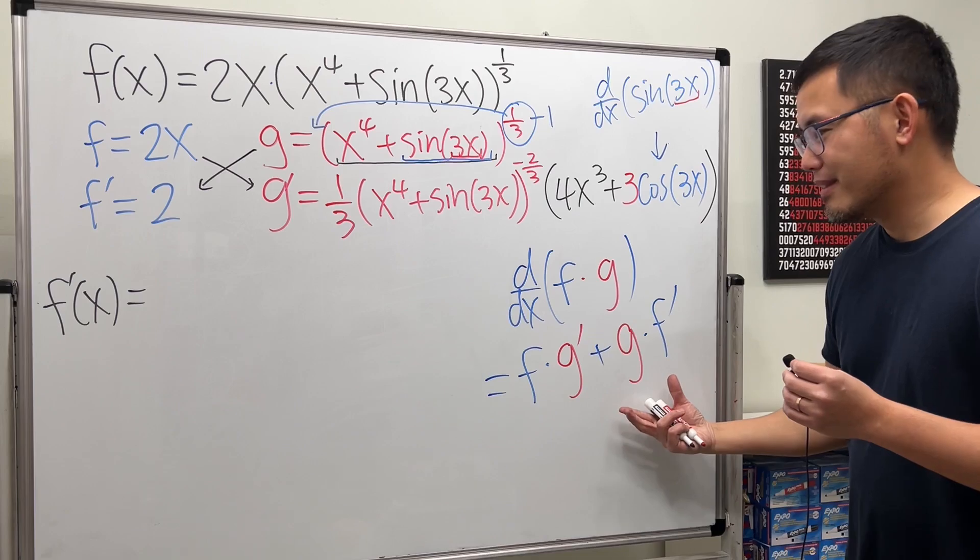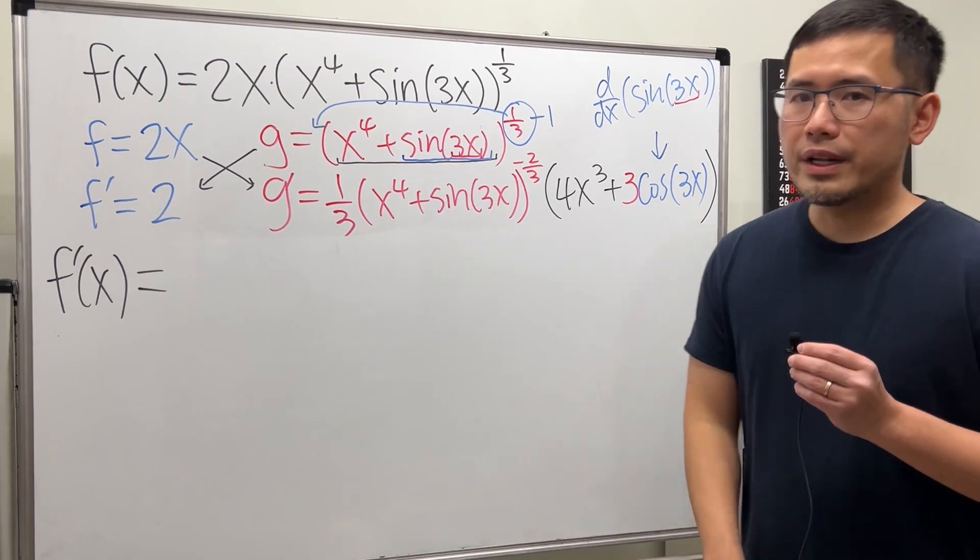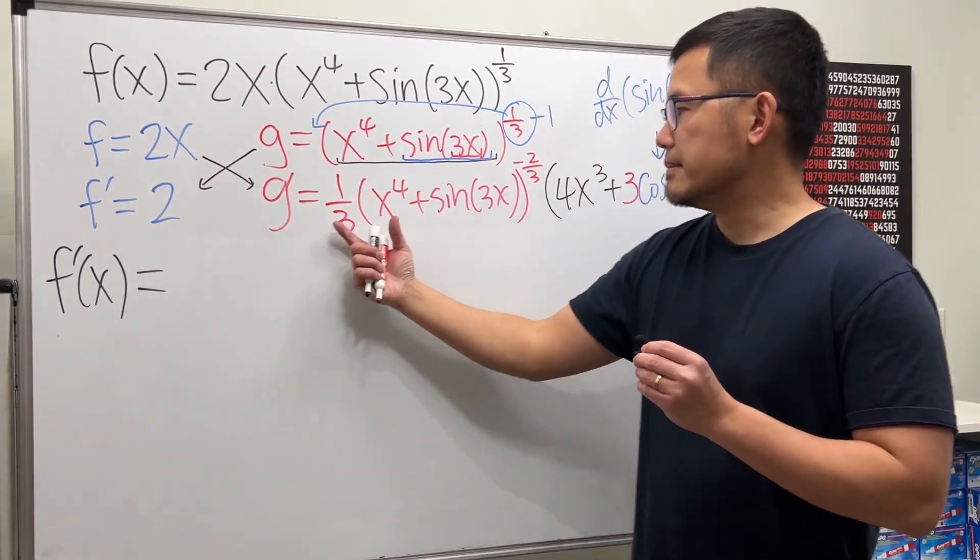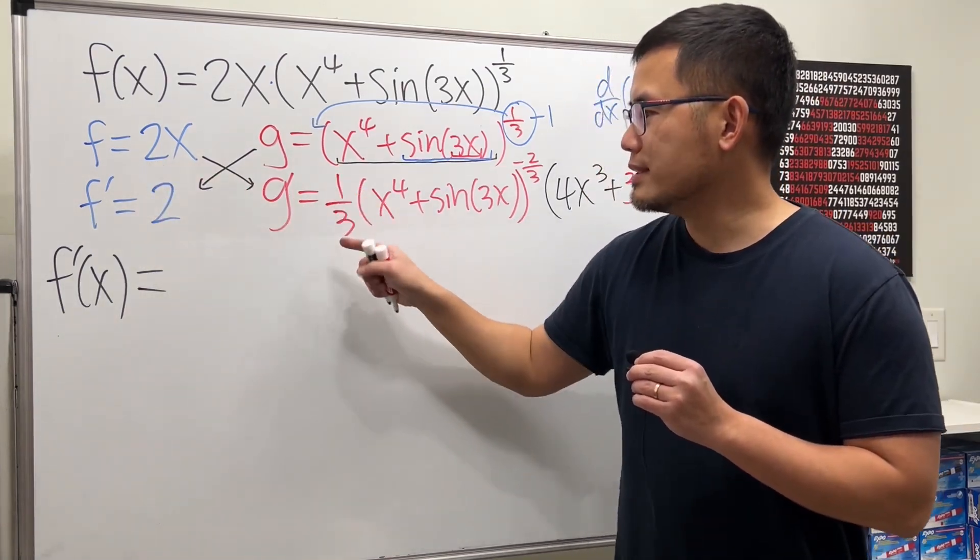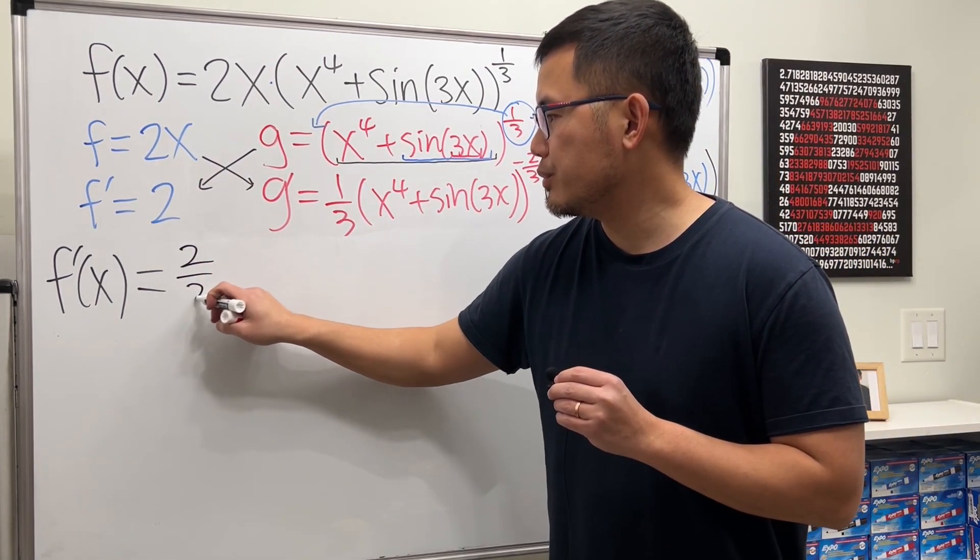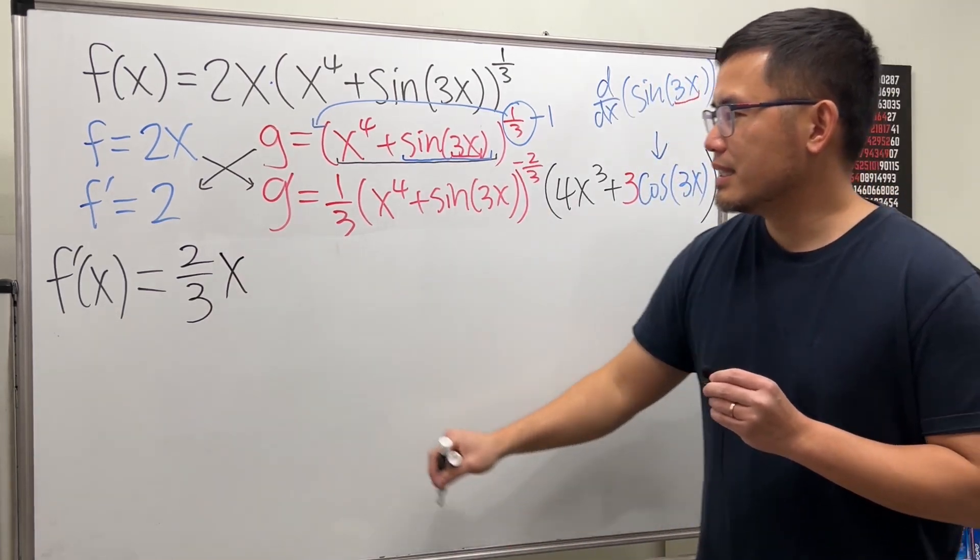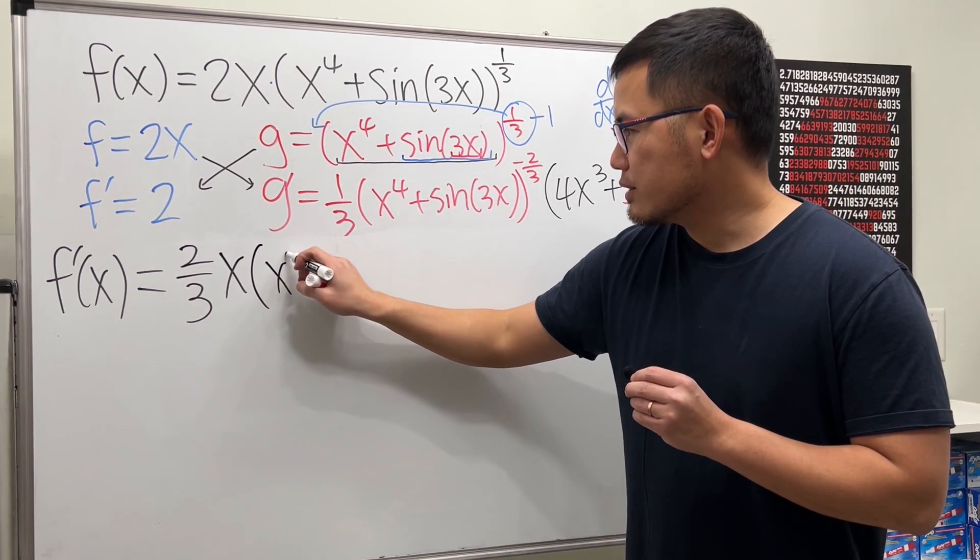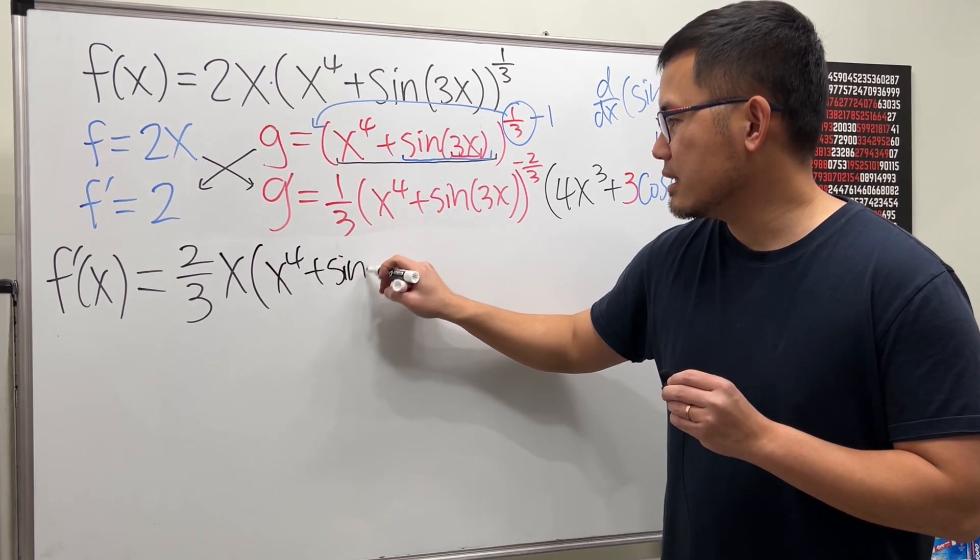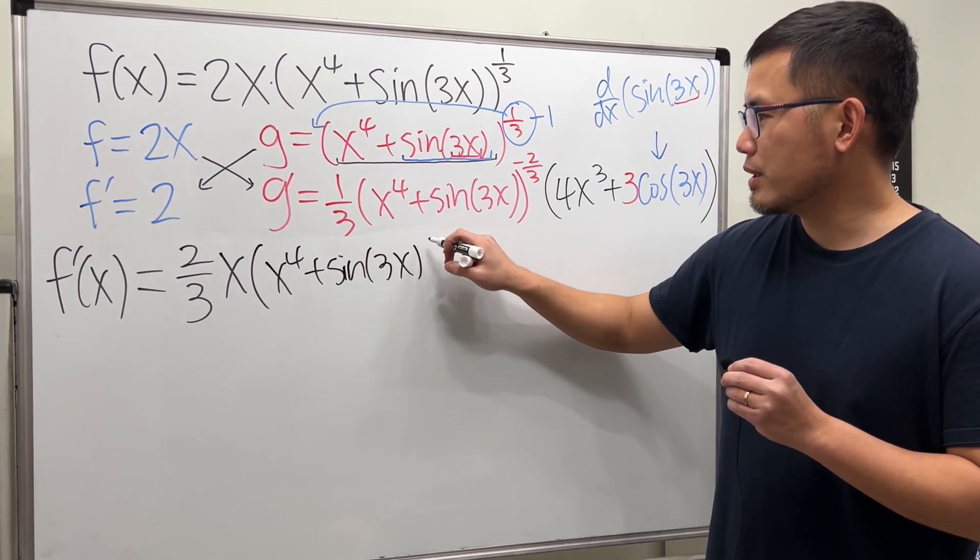g times f prime. Product rule. Alright, here we go. 2x times all this. 2 times 1 third. We can write here as 2 over 3. And then we have this x. And then just write down the rest. So parentheses. And then x to the fourth plus sine of 3x. Close parentheses. Close parentheses.